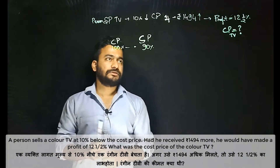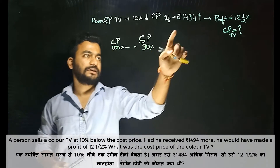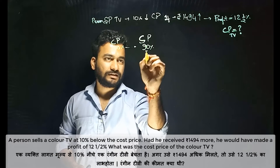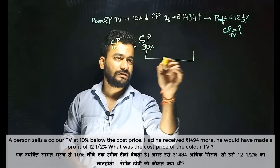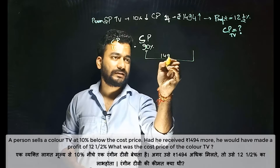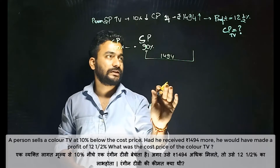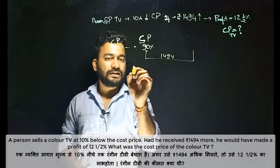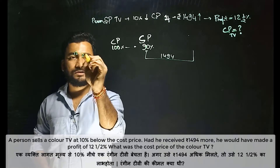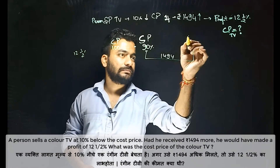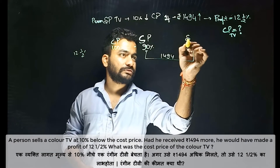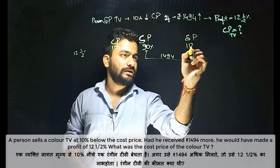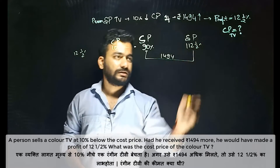Now, if the person gets 1,494 rupees more, that means the profit is 12 and a half percent. So the selling price in that case would be 112.5% of the cost price.